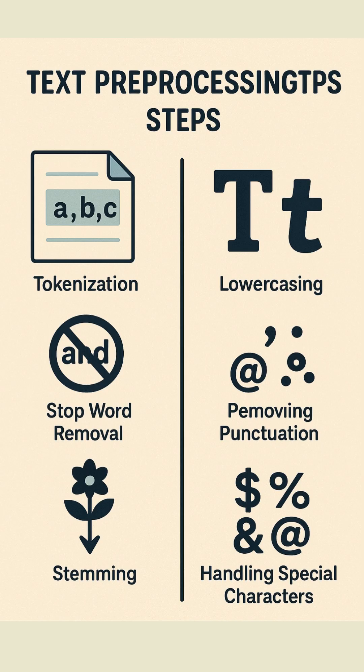The next step is stemming and lemmatization, which means reducing words to their base form. For example, 'running' becomes 'run' and 'playing' becomes 'play.'